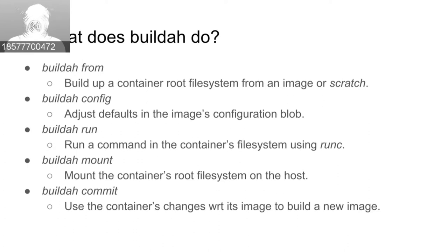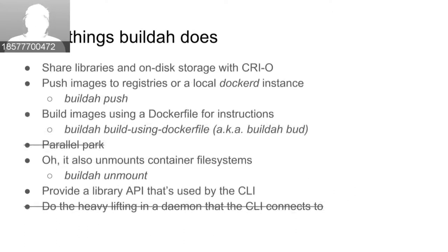We produced a tool called Buildah that automates all of this. The 'buildah from' command pulls down an image and generates a filesystem with a new writable layer. If you're using copy-on-write filesystems you can mount the container for direct manipulation, run commands in it using runc, and then commit your changes to produce a new image. One key goal was reusing the libraries from CRI-O, so images pulled or committed by Buildah are immediately visible to CRI-O because they share the same storage space.